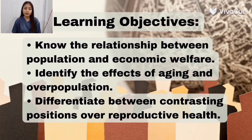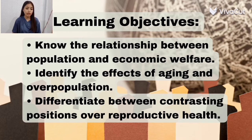Our learning objectives are: first, know the relationship between population and economic welfare; identify the effects of aging and overpopulation; and, of course, differentiate between contrasting positions over reproductive health.